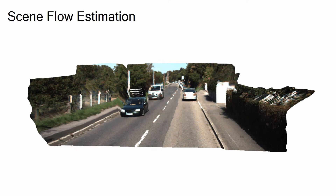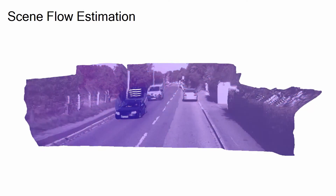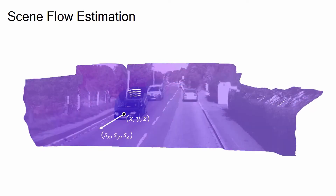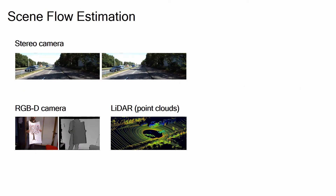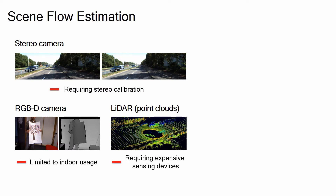Scene flow estimation is the task of obtaining 3D structure and 3D motion of dynamic scenes. Many approaches have been recently proposed leveraging various types of input data, but each of their sensor configurations has limitations, such as requiring calibration, being limited to indoor usage, or requiring expensive sensing devices.